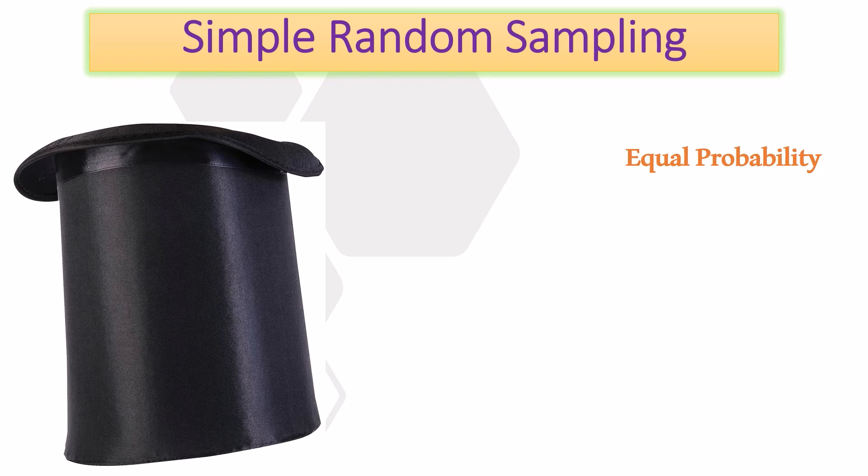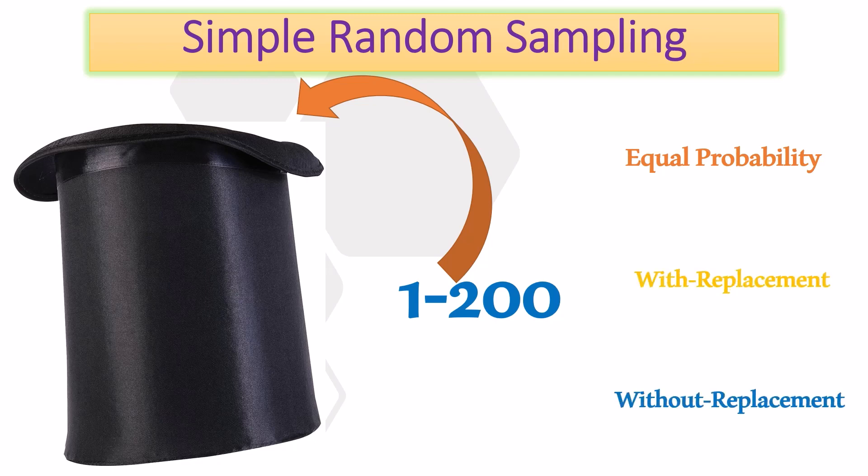Let's say we have listed people with their names on a list of 1 to 100. Here each person will have equal chance of being picked. It can be anyone on the list between 1 and 200. Simple random sampling is of two types, with replacement and without replacement.